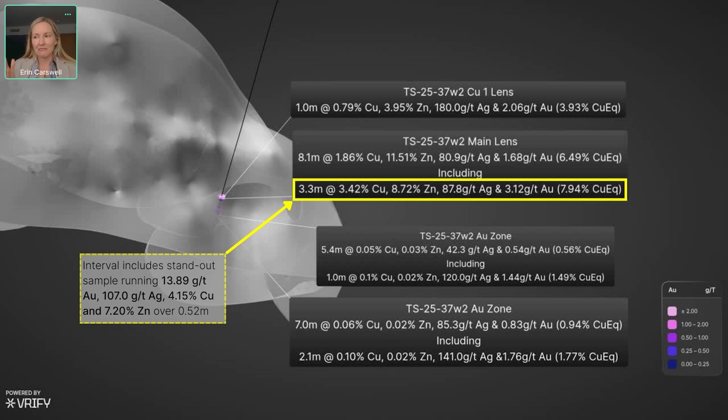You go down into the main lens and you get 8.1 meters running nearly 1.9% copper, 11.5% zinc, 81 grams silver and nearly 1.7 grams gold. So again, this is more elevated copper than we would typically see in the main lens further up dip, or in the rest of Tesla, and definitely more elevated gold. So it's about four or five times the amount of gold that we would typically see in the main lens.